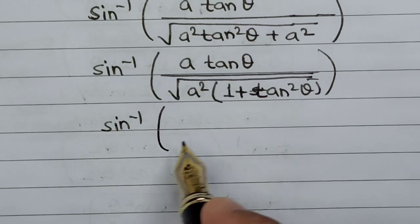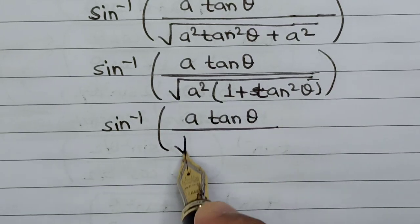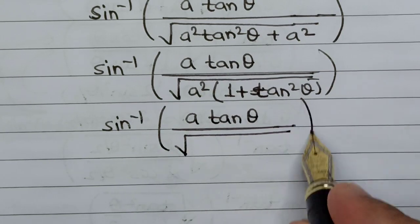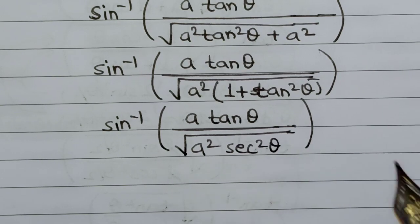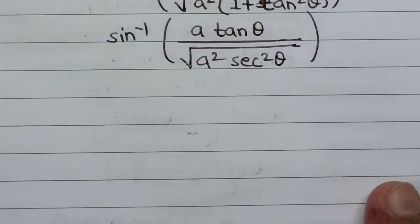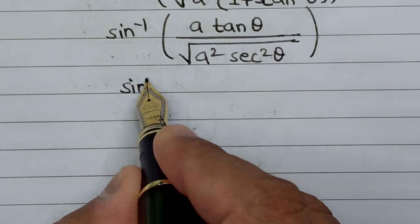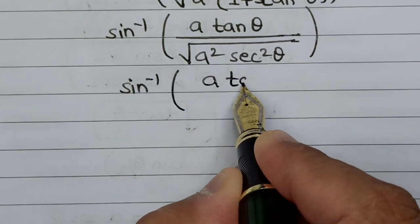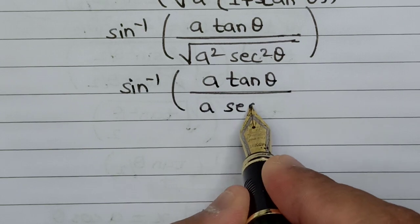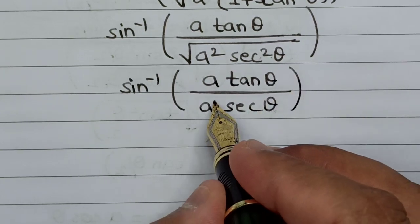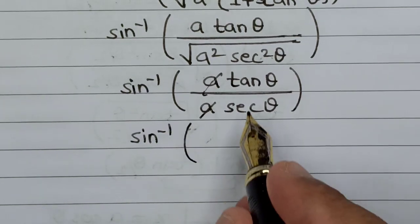So this will be a tan theta divided by square root of a squared sec squared theta. Since this value is inside a square root, this can be brought outside, so this will be a tan theta divided by a sec theta. The a's cancel out.